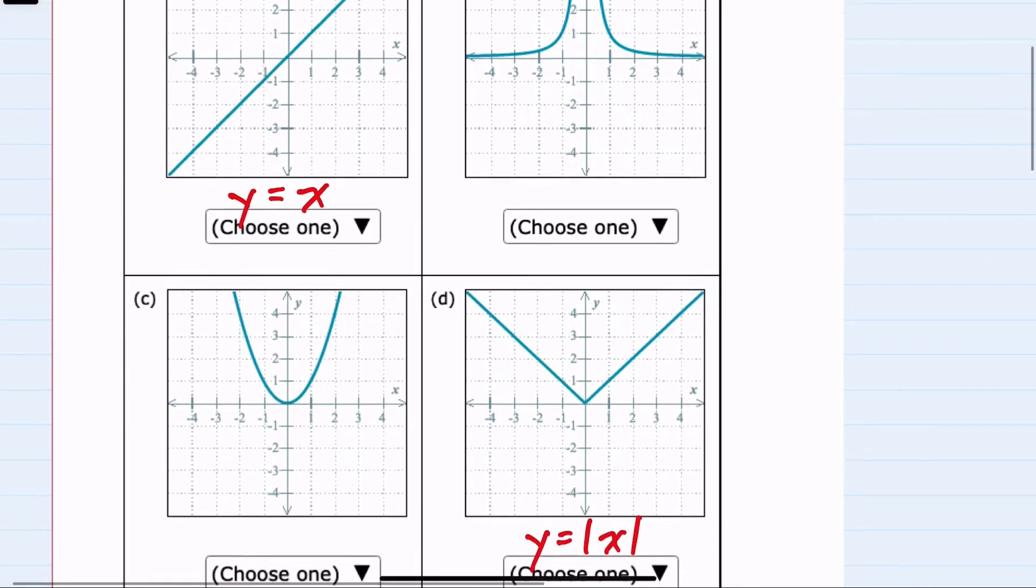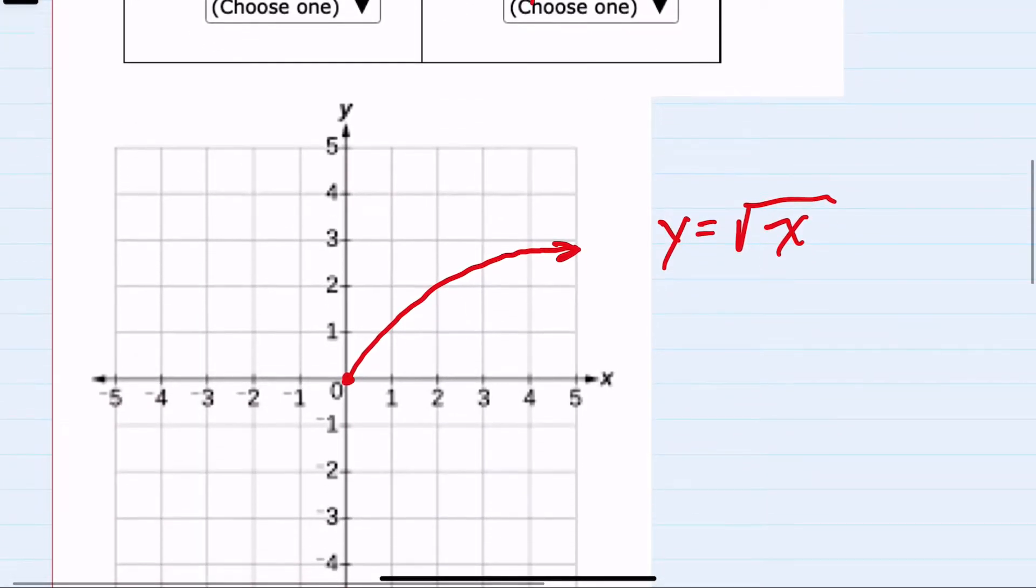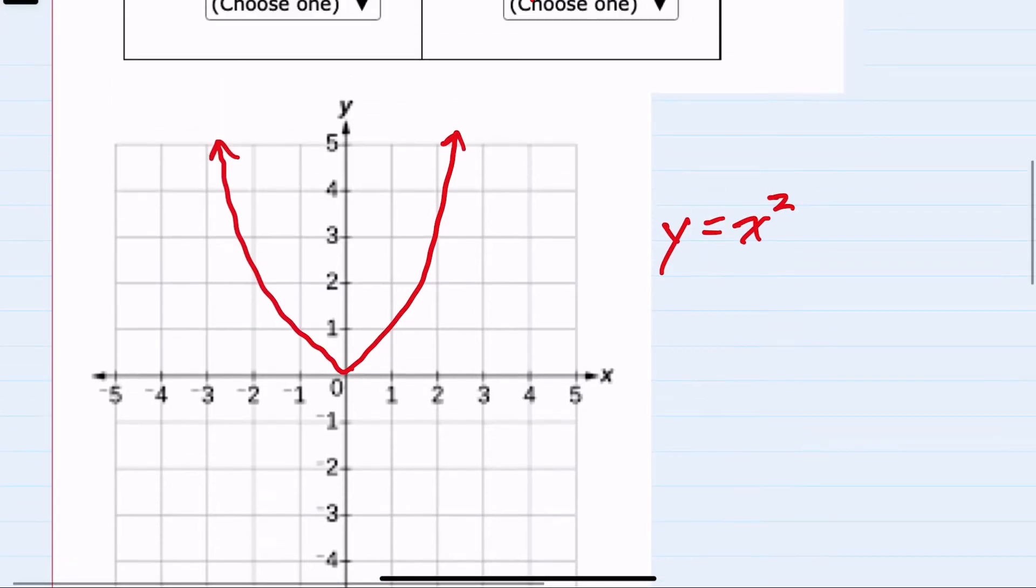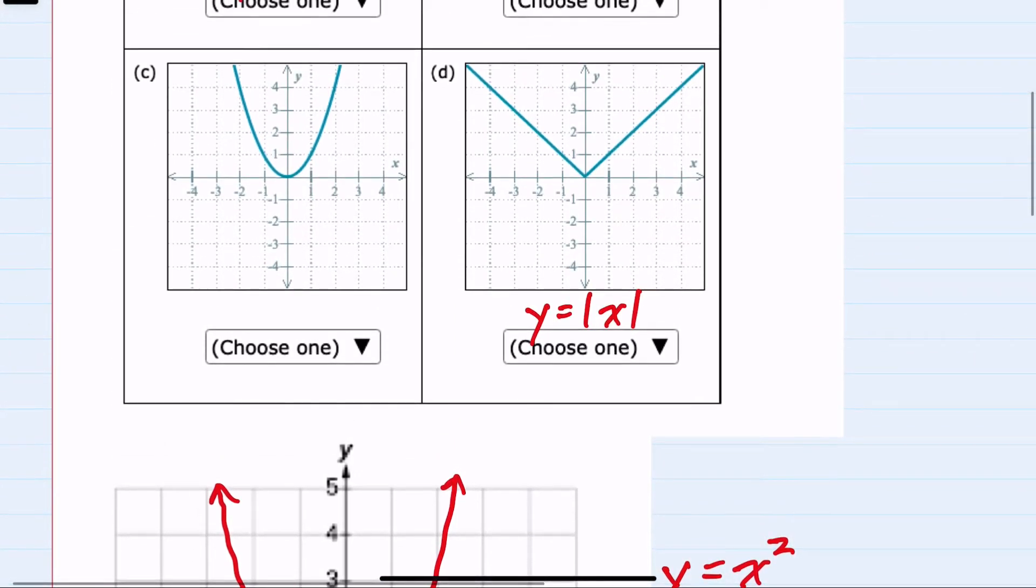Looking at y equals x squared, that has that general u shape. And looking back, we do see that represented here, so this parent function would be y equals x squared.